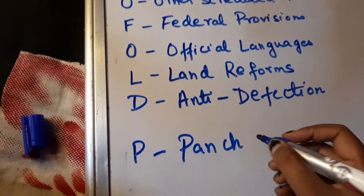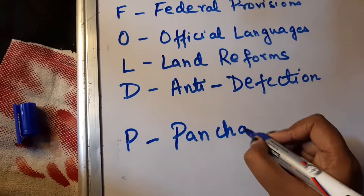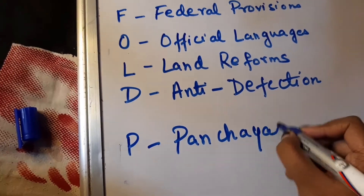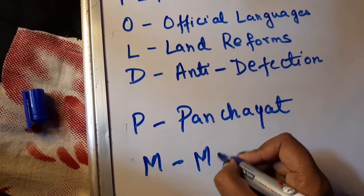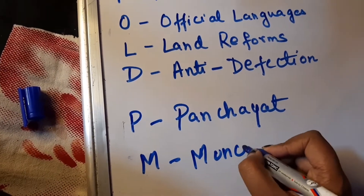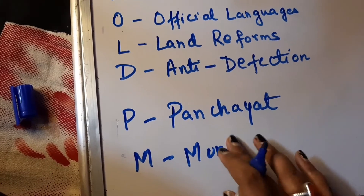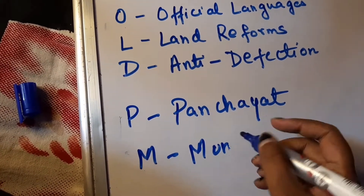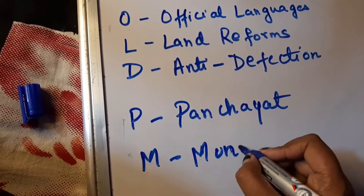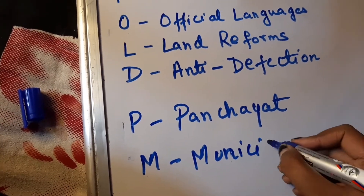Finally, we solve PM. With P we get Panchayat — Schedule 11 deals with Panchayat. And with M we get Municipality — Schedule 12 deals with Municipality.